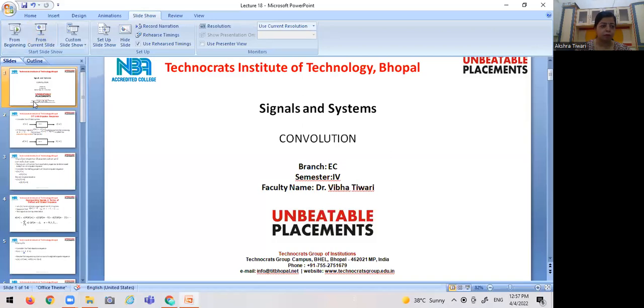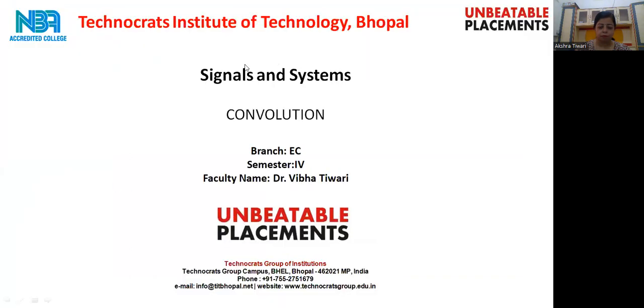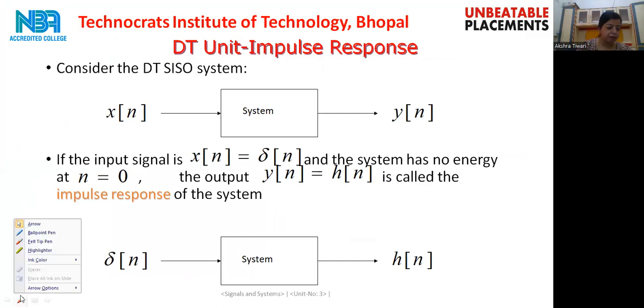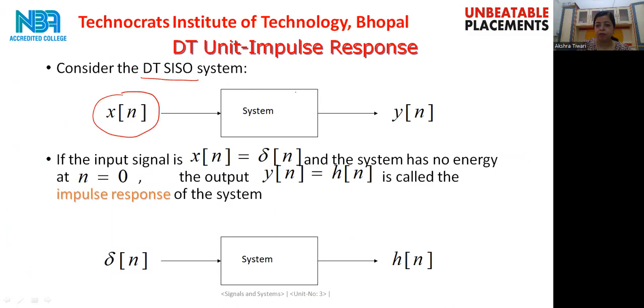Good morning everyone. Today we are going to start with calculating the impulse response of a discrete time LTI system. So let me start with my presentation first. If we want to find the unit impulse response of a discrete time system, let us start by considering a discrete time single input single output system. We are going to apply input xn and this system will generate an output yn. We are interested in finding how to calculate this output yn. Now let us see exactly what is the meaning of the impulse response.